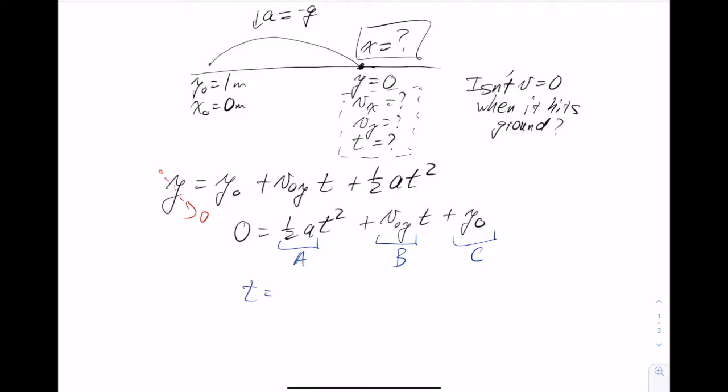is equal to negative b, which in this case is v0y, plus or minus the square root of b squared, so that's v0y squared, plus 4 times our capital A, which is one half acceleration, times c, which is y0. And that's all going to be divided by 2 times capital A, which is one half a.